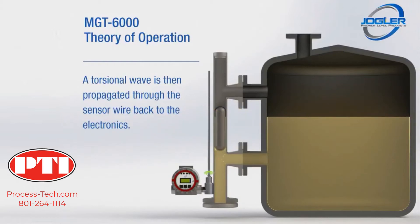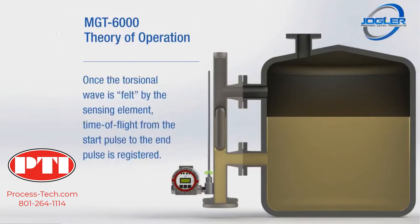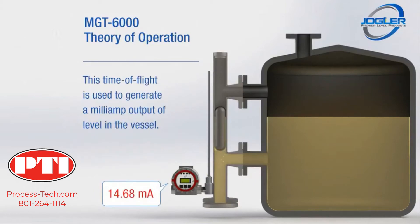Once the torsional wave is felt by the sensing element, time of flight from the start pulse to the end pulse is registered. This time of flight is used to generate a milliamp output of level in the vessel.